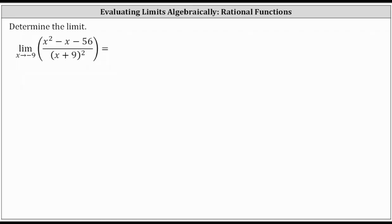We want to determine the limit if it exists. We have the limit of the rational function as x approaches negative nine. Right away, notice how if we try to perform direct substitution, we have a zero in the denominator, which indicates we cannot determine the limit by performing direct substitution.